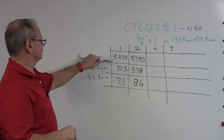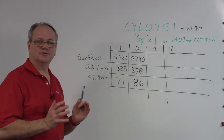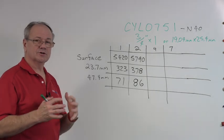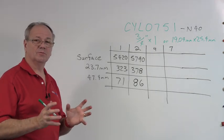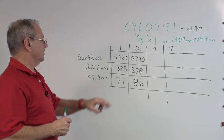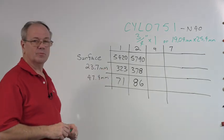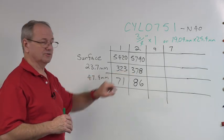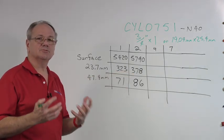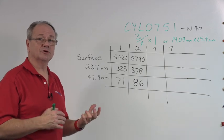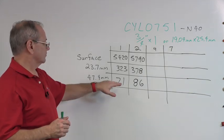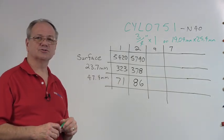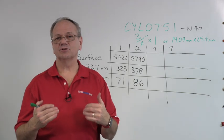As you can see, our original number on the surface was 5420, and we see that it did increase to 5790. So we get a little bit of an increase, but we doubled the magnet length. At 23.7 millimeters away, we noticed that it did go up from 323 to 378. But you would think if I'm doubling the magnet, I would double the field, but you don't. At 47 millimeters away, we go from 71 to 86. So you can see we're not getting that much of a change.